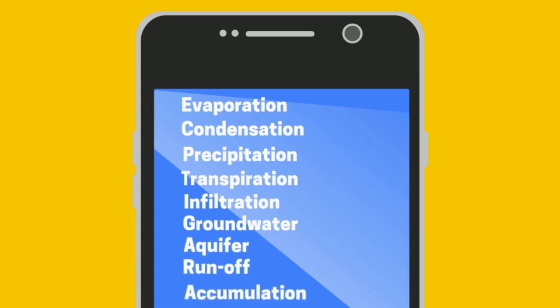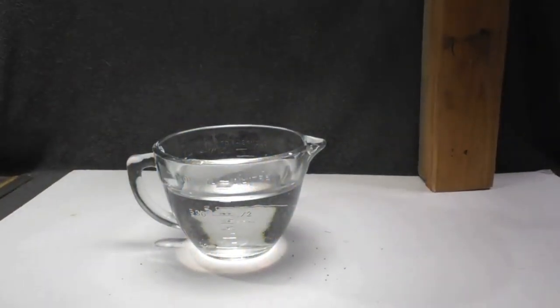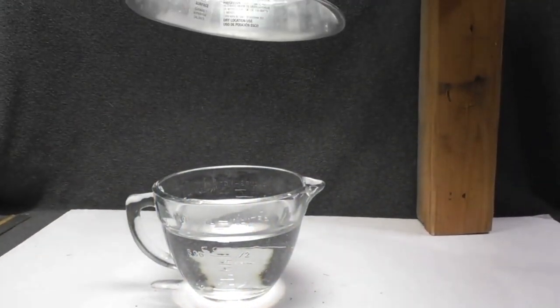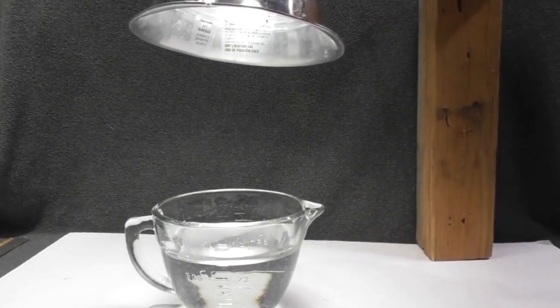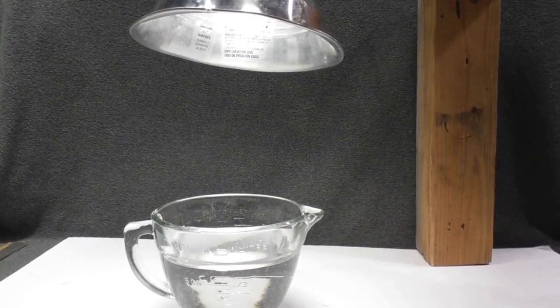So let's start with evaporation. Evaporation occurs when a liquid turns to gas. With this glass of water and the heat from the lamp, evaporation is occurring. The problem is you can't see the evaporation.